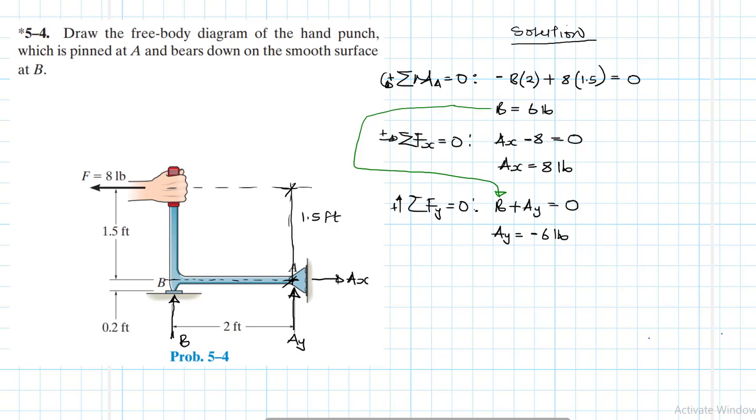If we were to write this, minus just simply means this sign is going to change. Instead of facing up, it will face down like this. So we have Ax equal to 8 pounds, Ay equal to 6 pounds, and B equal to 6 pounds.